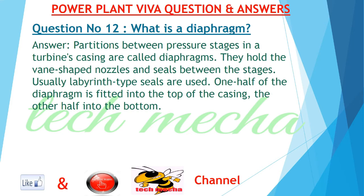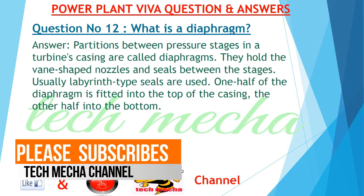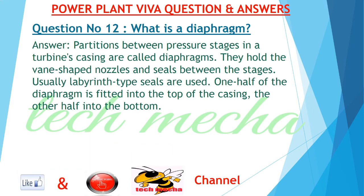Question number 12: What is a diaphragm? Partitions between pressure stages in a turbine's casing are called diaphragms. They hold the vane-shaped nozzles and seals between the stages. Usually labyrinth-type seals are used. One half of the diaphragm is fitted into the top of the casing, the other half into the bottom.